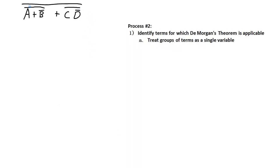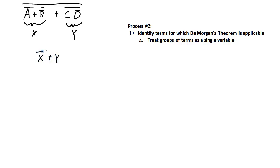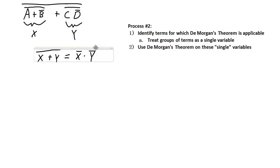Let's go through process two. I have an example expression to simplify using De Morgan's theorem. Step one is to identify terms for which De Morgan's theorem is applicable. I can apply it to the whole expression, but within it I'll identify groups: here I've got A or NOT B all inverted — I'll call that X — and here I've got C, NOT D all inverted — I'll call that Y. So the expression becomes X or Y all inverted, which equals NOT X ANDed with NOT Y. That was step two: using De Morgan's theorem on these grouped variables.